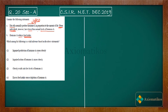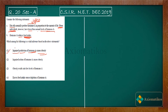Let us read the first statement option: impaired production of hormone A causes obesity. Impaired means less production — not a proper production. So less production of hormone A will cause obesity. This is correct, because if hormone A is in enough supply, an individual will not feel hungry and will never become obese. So the first option is correct — this is what we can conclude.